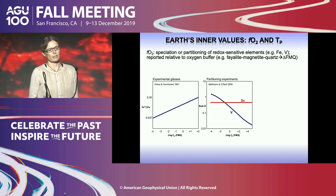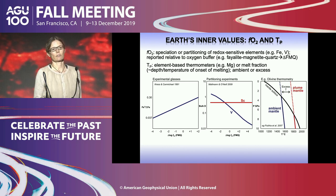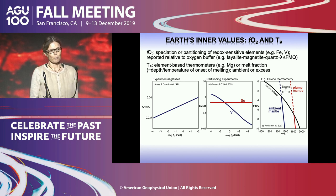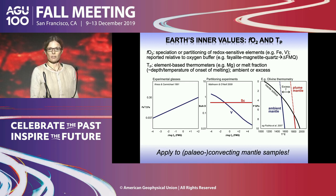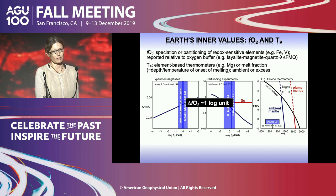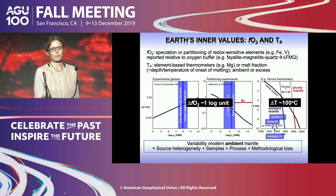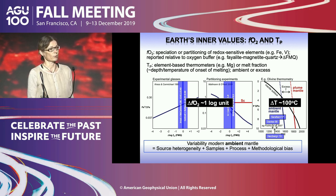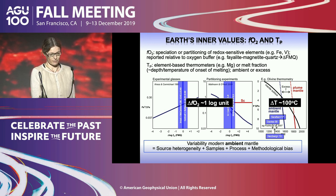Similarly, we can estimate mantle potential temperature from appropriate samples. This has led to recognition that ambient mantle assembled beneath spreading ridges has lower potential temperatures than plume-derived mantle. When we apply these tools to convecting mantle samples through time, even just for the modern ambient mantle there's a range of estimates amounting to at least one log unit difference in oxygen fugacity and at least 100 degrees variation in mantle potential temperature. This probably reflects true heterogeneity but also possibly inappropriate samples, unaccounted processes, and methodological bias.